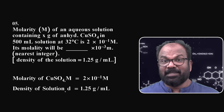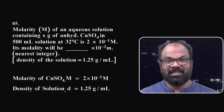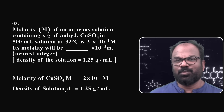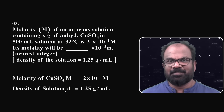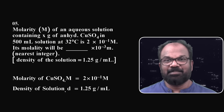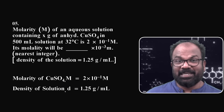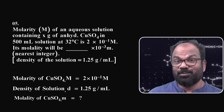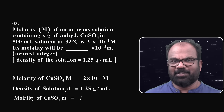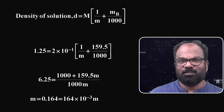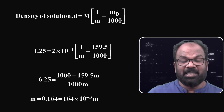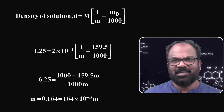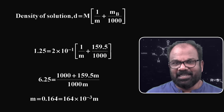Next, question number 5. The molality of an aqueous solution containing x grams of anhydrous copper sulfate in 500 ml solution at 32°C is 2 × 10⁻¹ molar. Its molarity will be ___ × 10⁻³ (nearest integer). Given: density of the solution is 1.25 g/ml. Using the relationship d = M × (1/m + molecular mass of solute / 1000), and substituting the values of density, molality, and molecular mass of solute, the molarity is calculated to be 164 × 10⁻³. So the answer is 164.